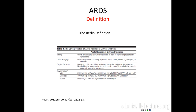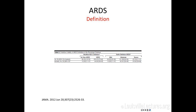Basically, ARDS is a non-cardiogenic pulmonary edema. They found that this grading has some prognostic significance. If you have mild ARDS, your mortality is around 20%. If you have moderate ARDS, your mortality is around 41%, and if you have severe ARDS, your mortality is 50%.